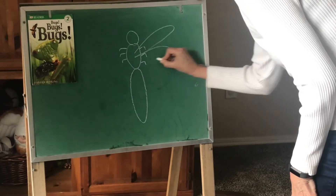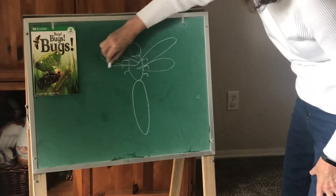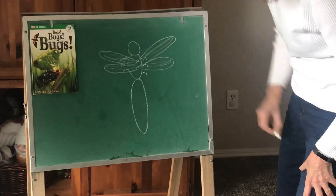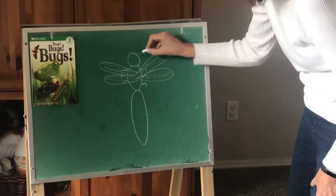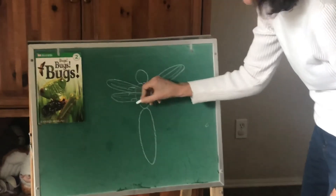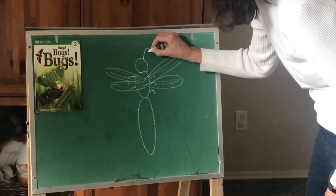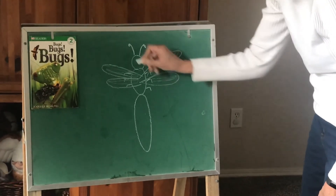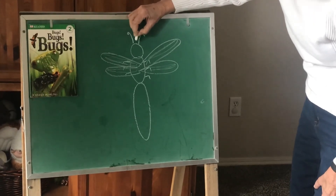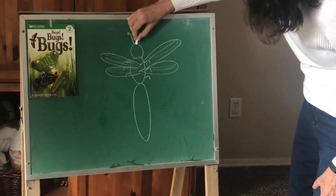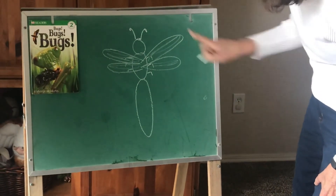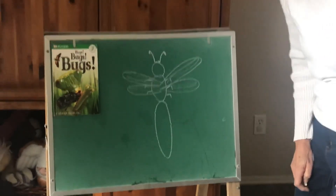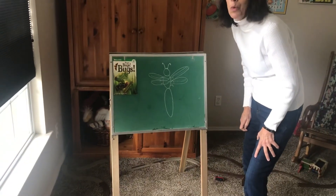I'm going to make big wings that come out like this and color them in a little. What else does he need? Three parts, six legs, and antennae. Mine has wings, and this is the top of him so you can't really see his face, but I'll put some little bumps there for his eyes. Can you tell what he is? He's supposed to be a dragonfly!